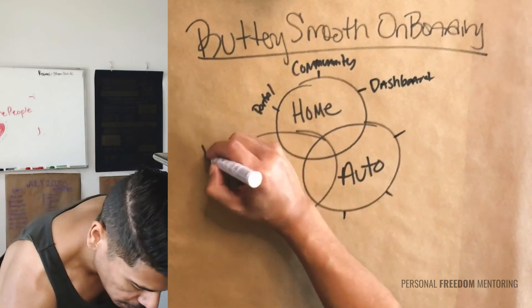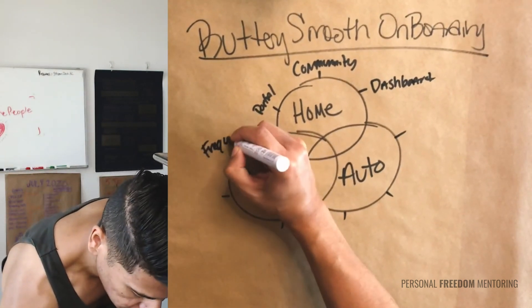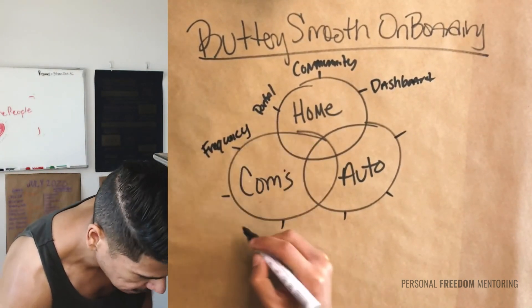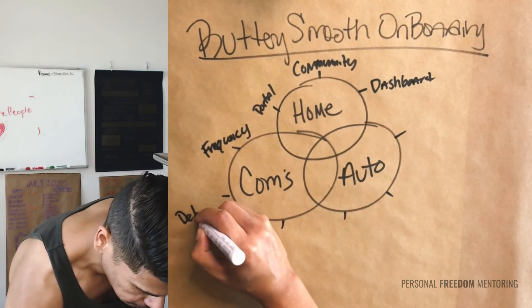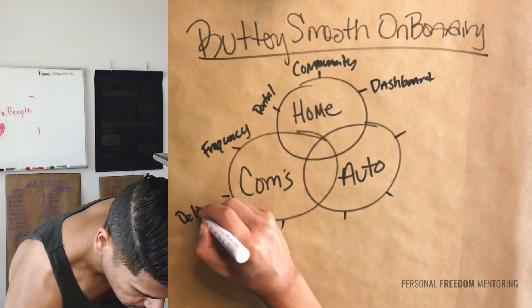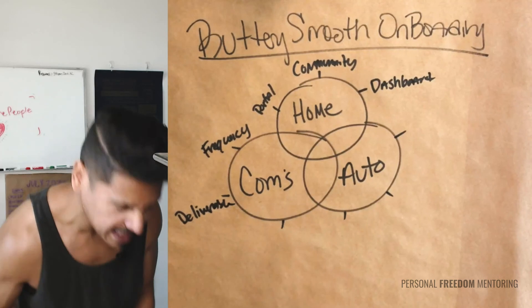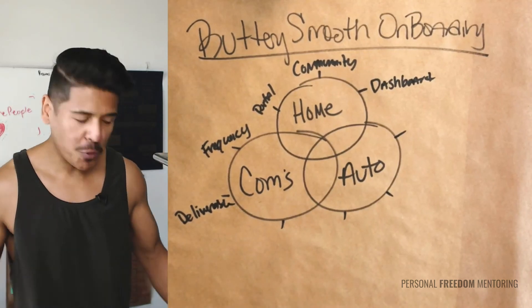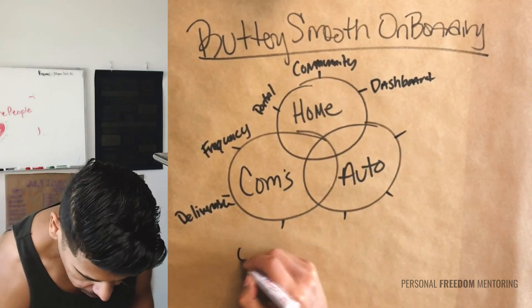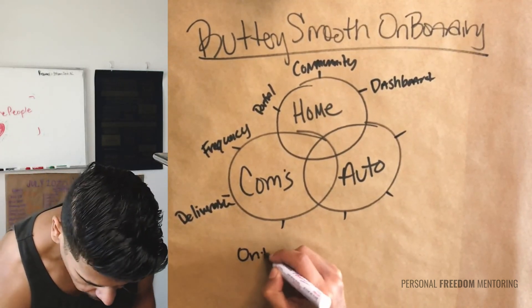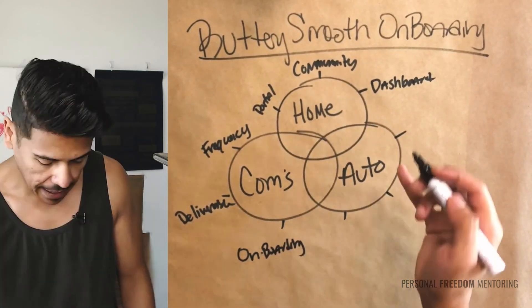When it comes to communication, the first thing you have is frequency. The second thing you have is the deliverables — if you have call recordings or things like that, where do they go, where do you put them, how do they get them? And then you have the actual onboarding part of it.